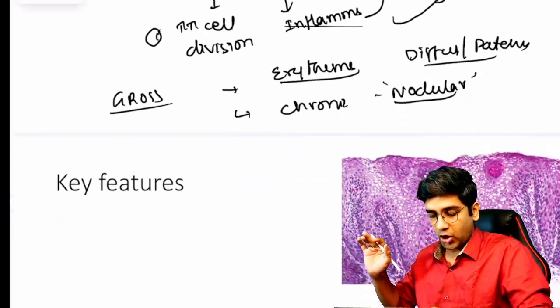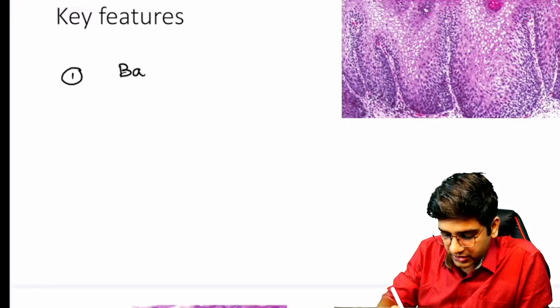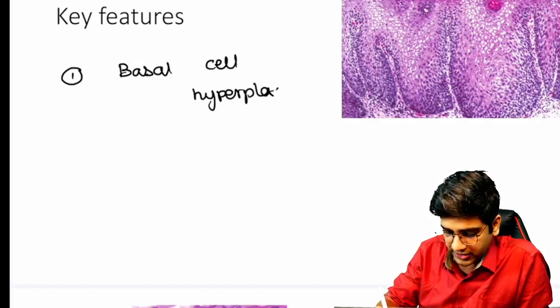Like I said, there are three things that are very important for me—three unique findings for GERD. All of them, like I said, are due to a reparative change. The first thing for me is basal cell hyperplasia. This is very unique. Basal cell hyperplasia is kind of diagnostic of GERD.